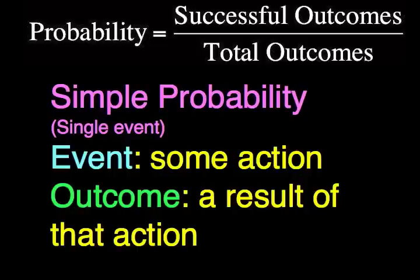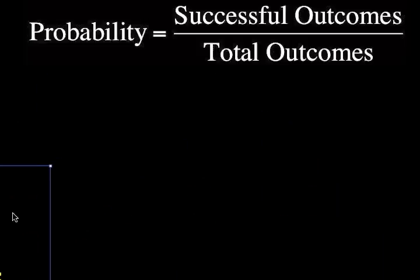Hello. In this second video on simple probability, we'll cover a couple more examples with slightly higher numbers. Just to review, simple probability deals with a single event. Event being just some action, and outcome being a result of that action. The definition of probability is the number of successful outcomes to the total number of outcomes, or the ratio of successful to total. Let's get this definition out of the way.